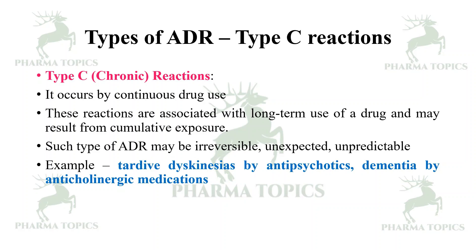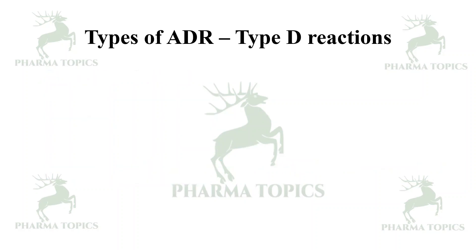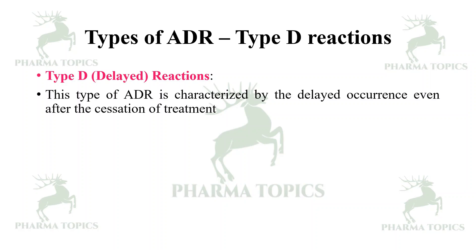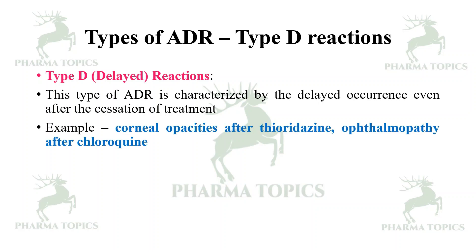Dementia caused by anticholinergic medications is another example. Next is Type D reactions — delayed reactions. This type of ADR is characterized by delayed occurrence even after cessation of treatment; that is, the treatment was stopped months ago but the ADR occurs later. Examples include corneal opacities after thioridazine, ophthalmopathy after chloroquine, and secondary cancers after taking anti-cancer drugs.